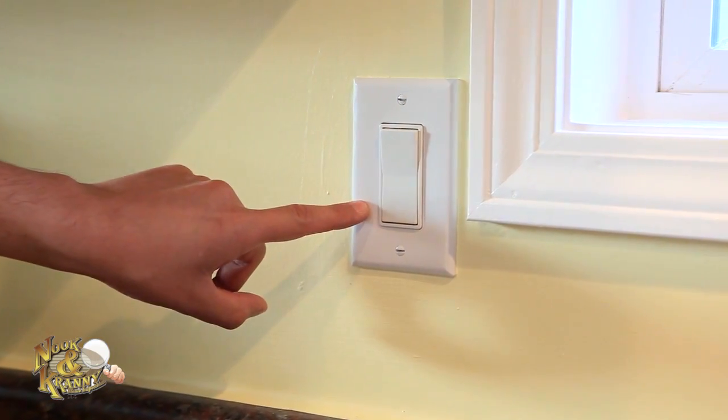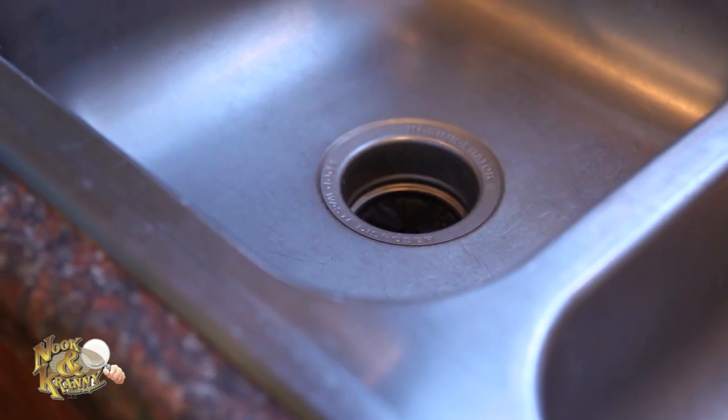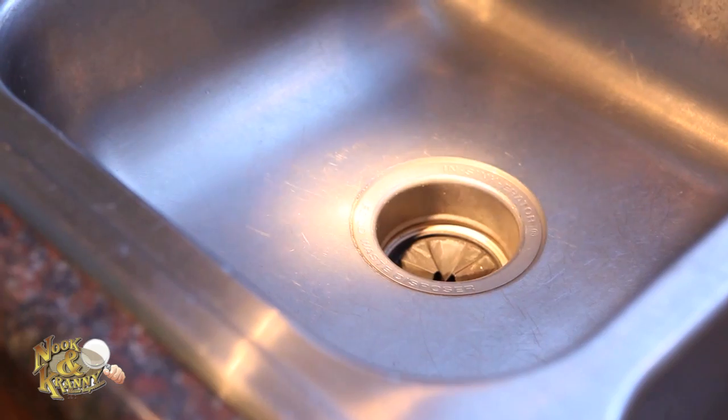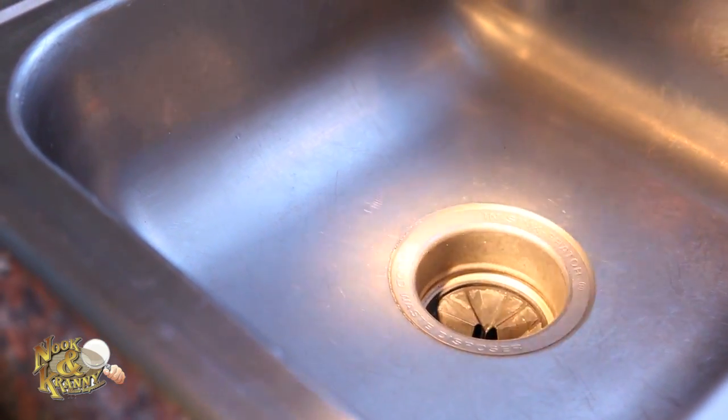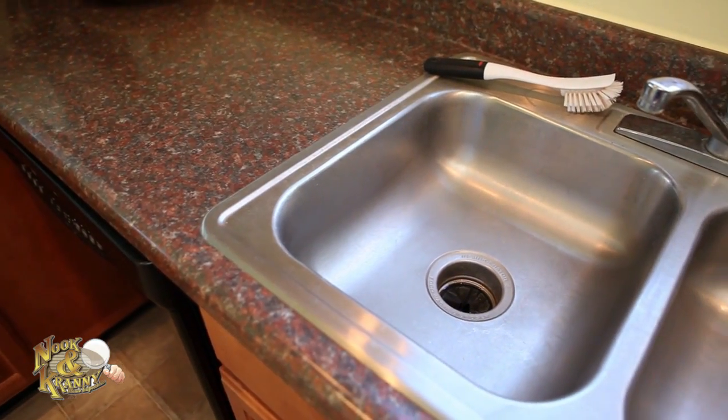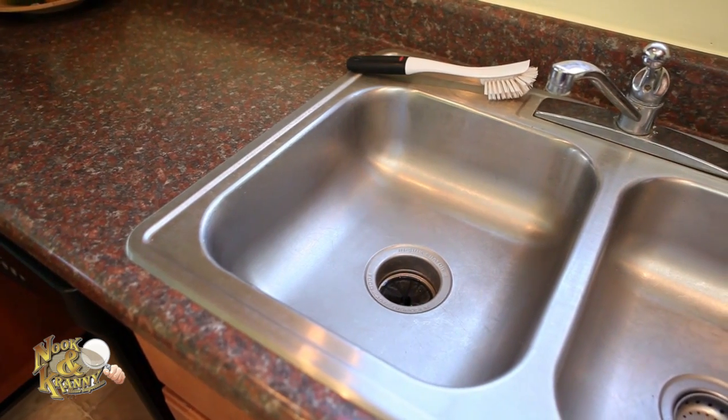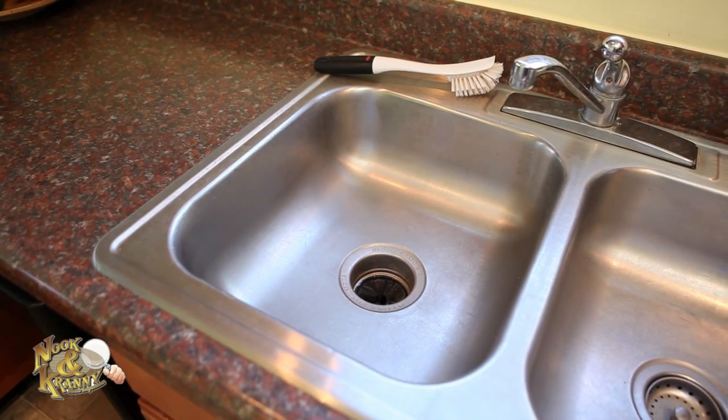First, make sure the disposal switch is off and look down the drain with a flashlight to see if there is a jam. Carefully remove any items that should not be processed through the disposal. If you remove items and the disposal still hums when you try to turn it on, try this tip.